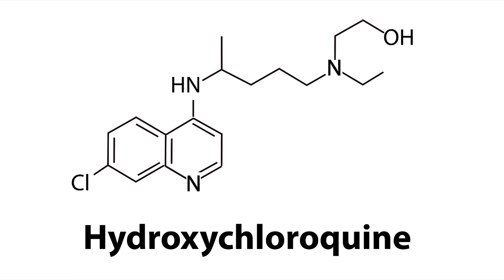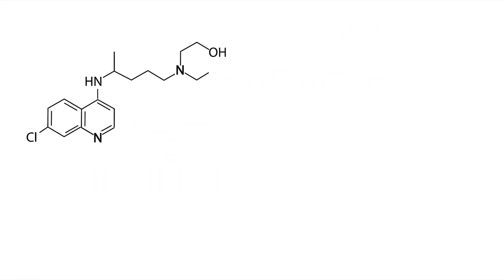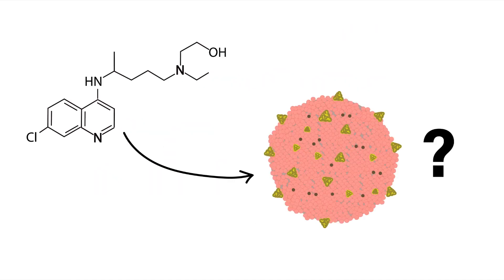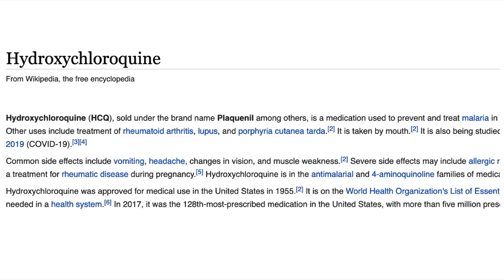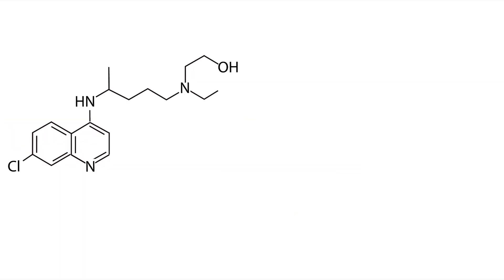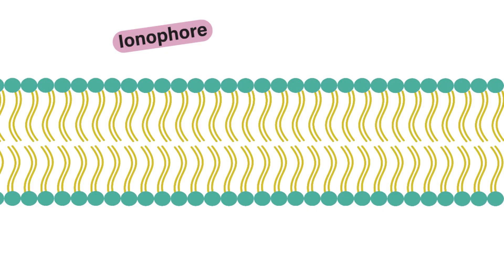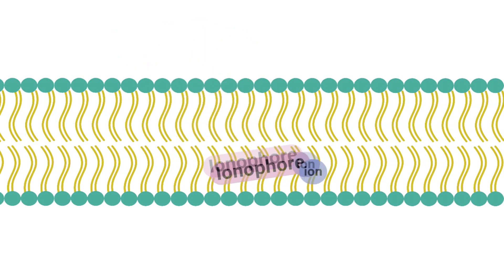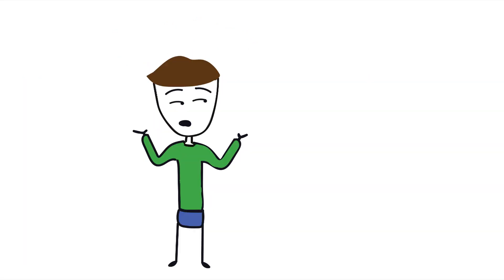Right to the point: what is hydroxychloroquine and how does it relate to coronavirus? Hydroxychloroquine is primarily used to treat malaria, and in addition has a second property where it behaves as an ionophore — a protein or molecule that transports ions across the cell membrane.